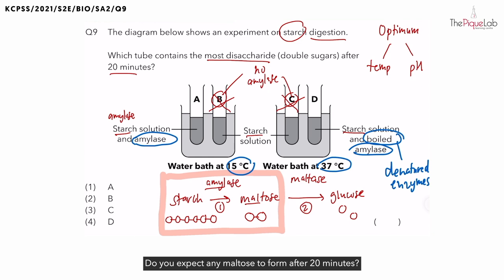Do you expect any maltose to form after 20 minutes? No, you do not expect any maltose to form after 20 minutes since the enzymes are already denatured. So which tube will have the most starch digestion to form the most maltose? It is actually test tube A. No matter how slow the enzymes are working at 15 degrees, it will have the most maltose, which is the disaccharide or the double sugars. Giving us our answer as option 1.